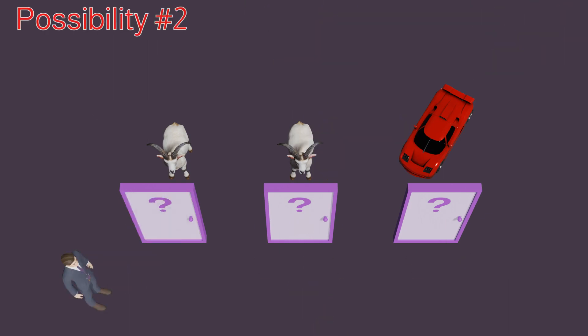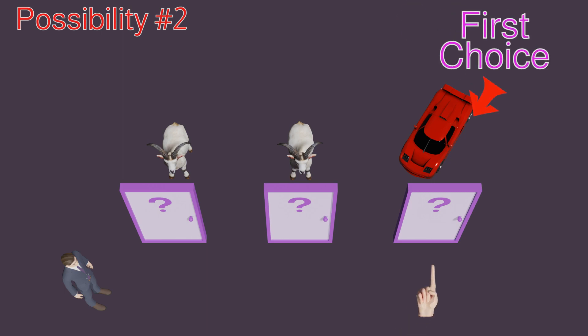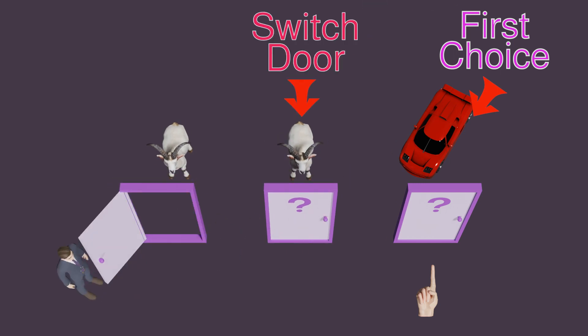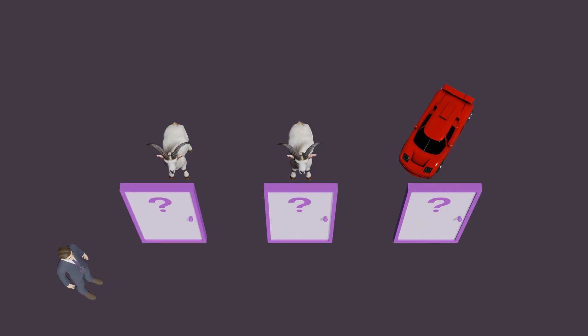On the other hand, if you first choose the only door hiding a car, it doesn't matter what Monty Hall does. There's only one car, so the remaining doors must have goats. He'll just randomly pick one of the goat doors, and the switch door will also be a goat. In both these two possibilities, you can see that the switch door always gives you the opposite item.